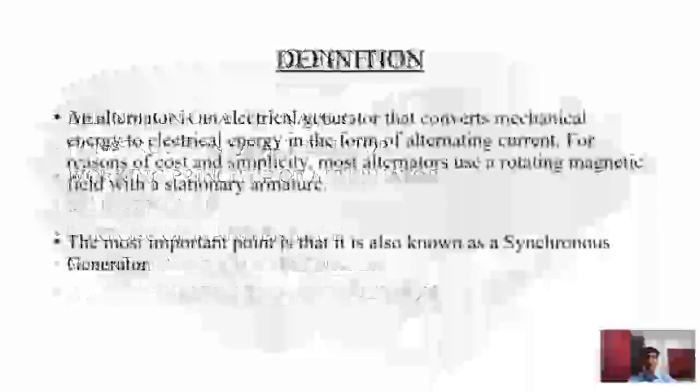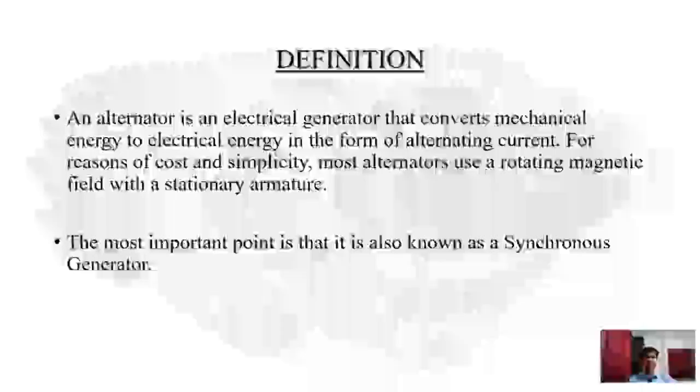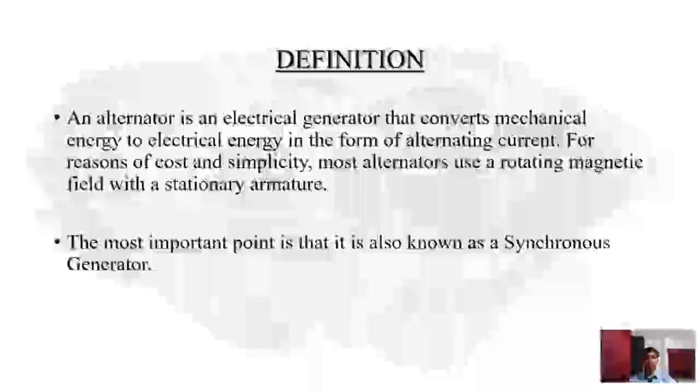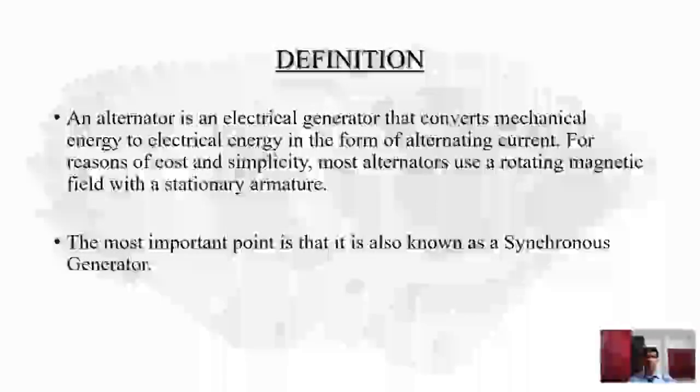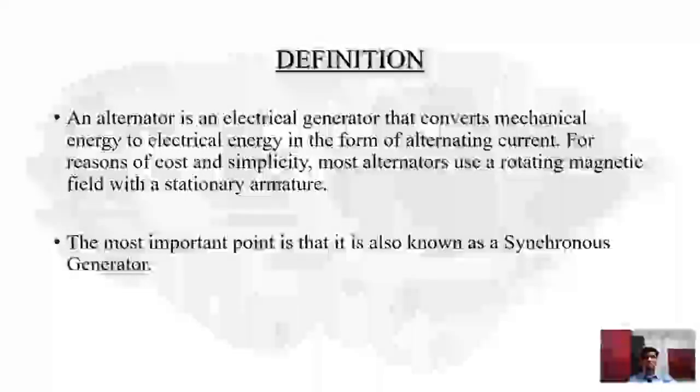Let's move on to the definition. What does the definition tell us? An alternator is an electrical generator that converts mechanical energy to electrical energy in the form of alternating current. For such conversion of energies, alternator is used. The reasons of using alternator are it is not only cheaper in cost but also simple in design. Most of the alternators use a rotating magnetic field with a stationary armature. The most important point to be noted is that it is also known as the synchronous generator.